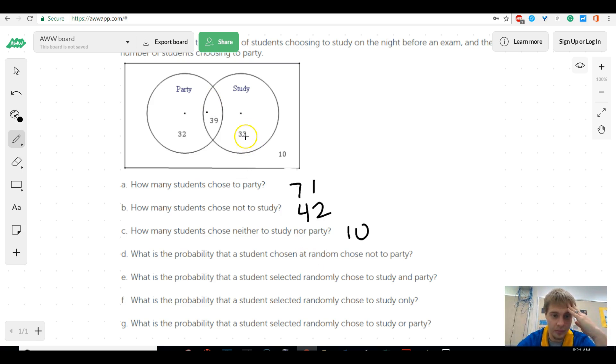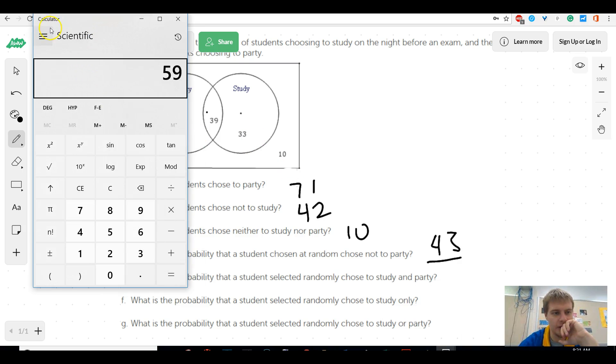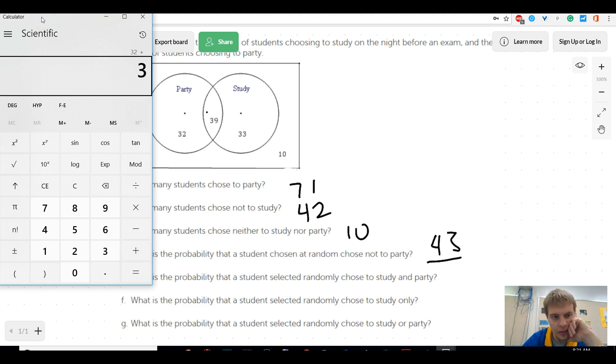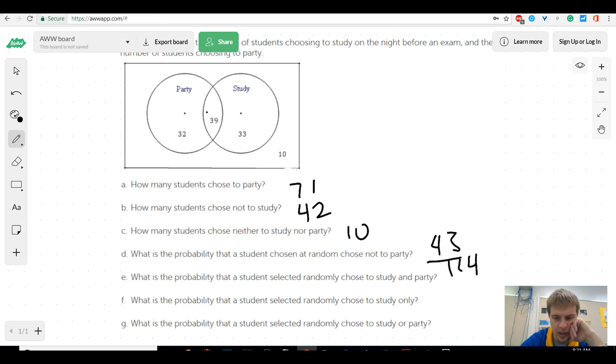What's the probability that a student chose at random chose not to party? Well, not to party would be this 43 over the total. So, let's find the total really quick. And this is always the worst part, just adding all this up. So, 114. And then, what is the probability that a student selected at random chose to study and party? Well, that would be this middle section. So, that'd be 39 over 114.